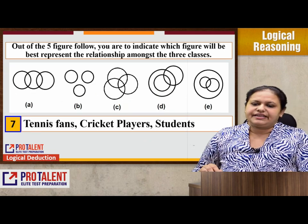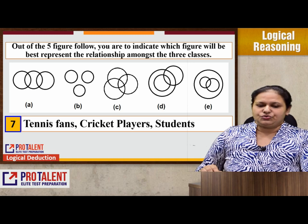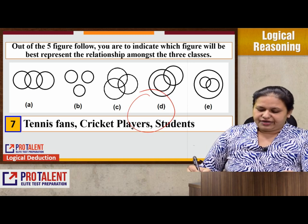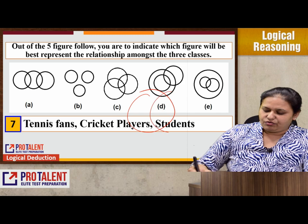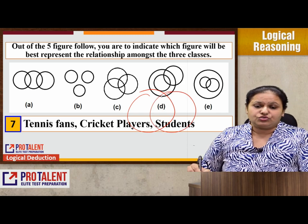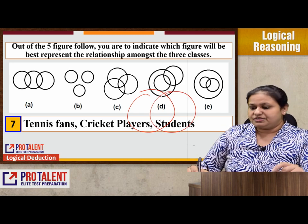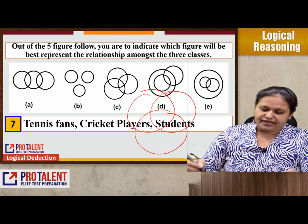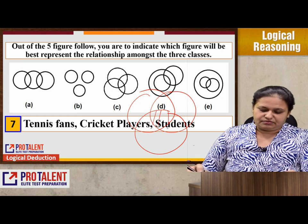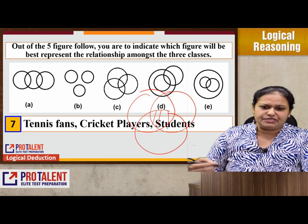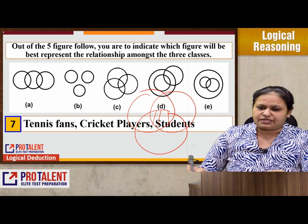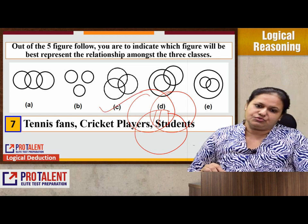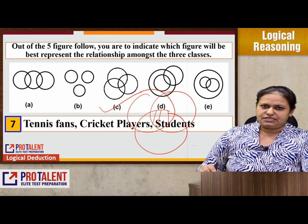Next question: tennis fans, cricket players, and students. Tennis fans can also be cricket players, and they can also be students. Students can also be tennis fans or cricket players, or they may not be. The best relation which we can represent here is through option C.